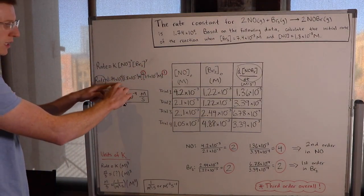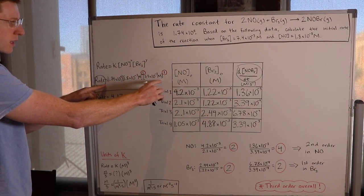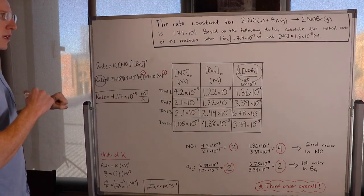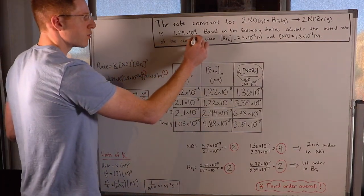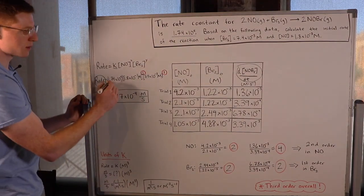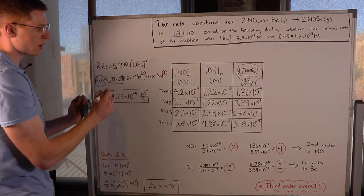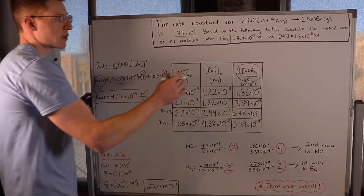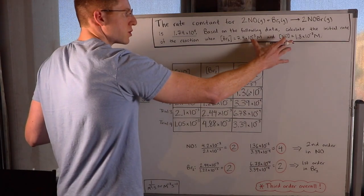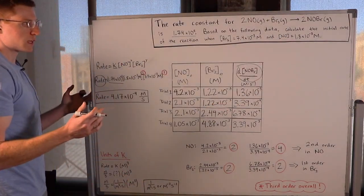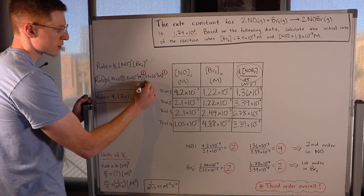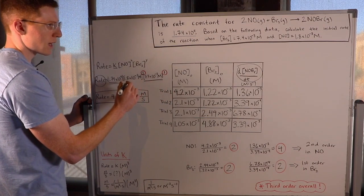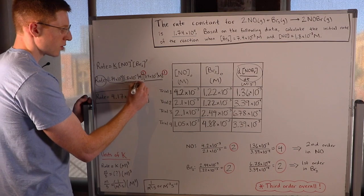In this next row I started plugging in the information that we do know. They told us K was 1.74 times 10 to the 4 — that's the rate constant. They also gave us the initial concentrations: Br2's concentration was 7.4 times 10 to the negative 3 molar, and NO's concentration was 1.8 times 10 to the negative 3 molar.